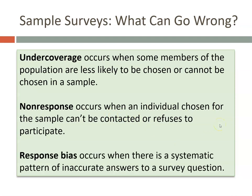Another error is response bias, which occurs when there is a systematic pattern of inaccurate answers to a survey question. This could arise from untruthful answers or poorly worded questions. For example, if asked whether you've visited the dentist in the last six months, someone might lie to avoid seeming unhygienic. Or, asked if men and women should have equal rights, someone might feel pressured to give the socially acceptable answer.